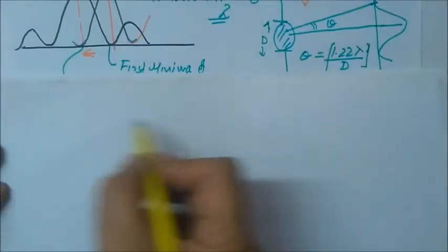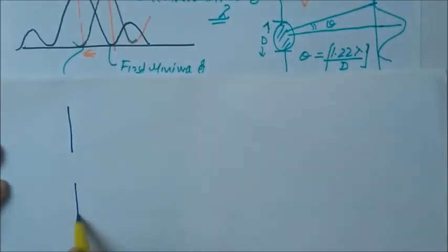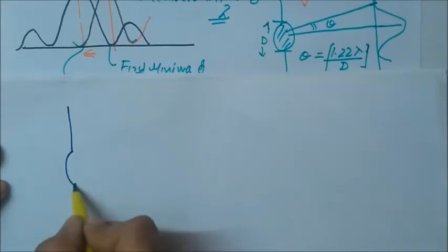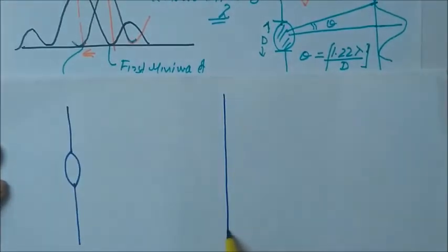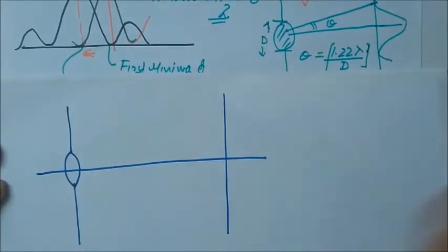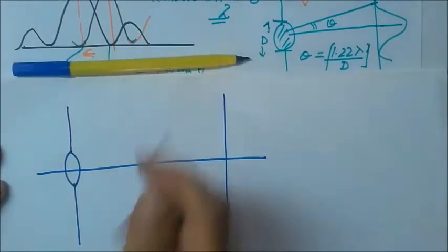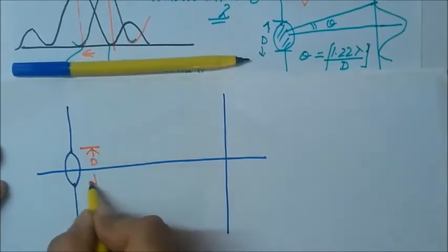Using this criteria we will derive the expression for the resolution by microscope, what is the minimum distance which it can resolve. Let this be the aperture with diameter D, this is the lens.